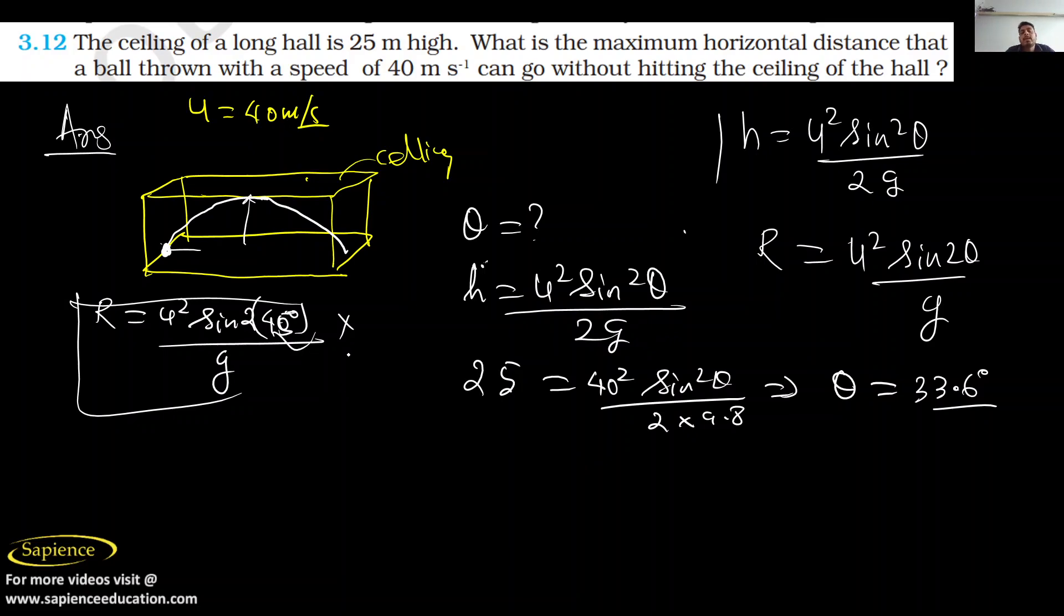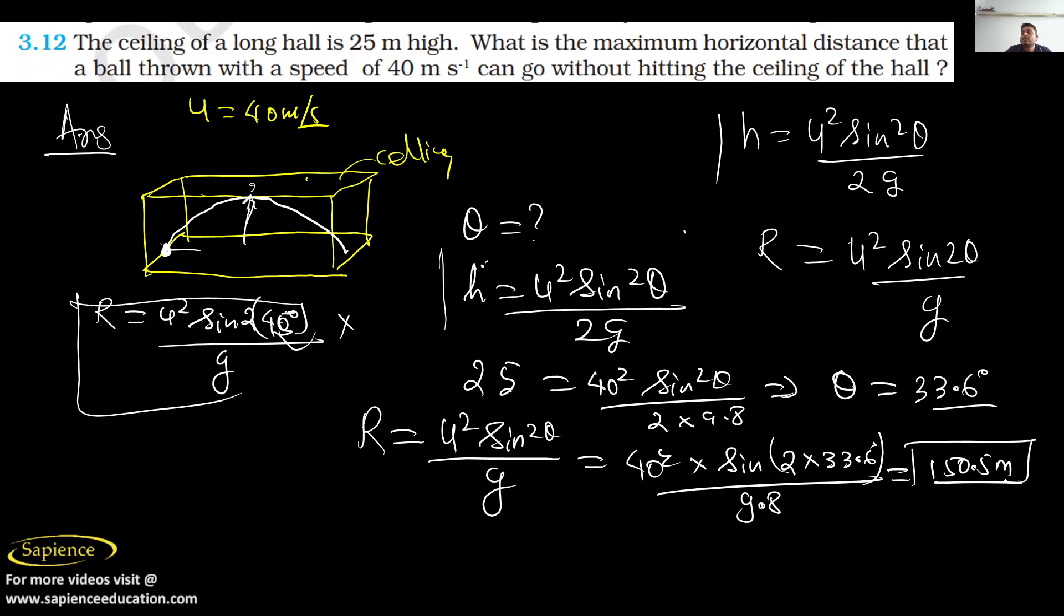Finally we have got θ as 33.6 degrees. We don't use 45 degrees because it may collide with the ceiling. Now if you got θ, can we find R? R equals u squared sine 2θ divided by g, so 40 squared into sine 2 into 33.6 degrees divided by 9.8. You will get the answer as 150.5 meters.